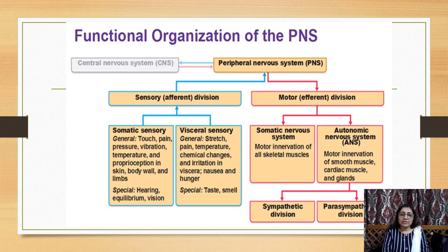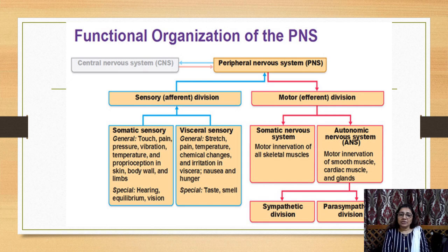In somatic sensory, sensations such as touch, pain, pressure, and vibration are carried from the skin, body wall, and limbs. Special sensations include hearing, equilibrium, and vision. Visceral sensations include general stretch, pain, temperature, chemical changes, and irritation in the viscera, as well as nausea and hunger. Special visceral senses are taste and smell. These are the peripheral sensations.